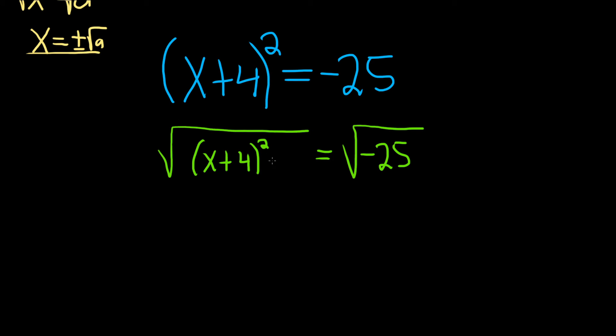All right, and again these go away, the square root and the 2, so you get x+4, and then here we're going to get a plus or minus from the square root property and the square root of 25 is 5, but we have a negative sign inside the square root so that's going to give us an i.